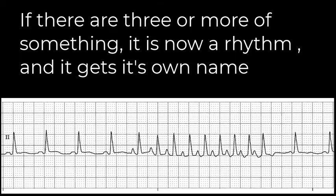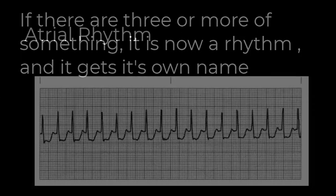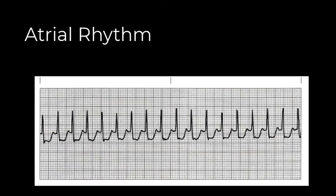With all of the ectopy we will discuss, whenever you see three complexes in a row of anything, you need to label that as a rhythm all its own. So when you see three or more atrial contractions together, that is now an atrial rhythm. Very commonly, those atrial rhythms will be at a rate greater than 100 because the atria are irritated, and if so, we call that atrial tachycardia.